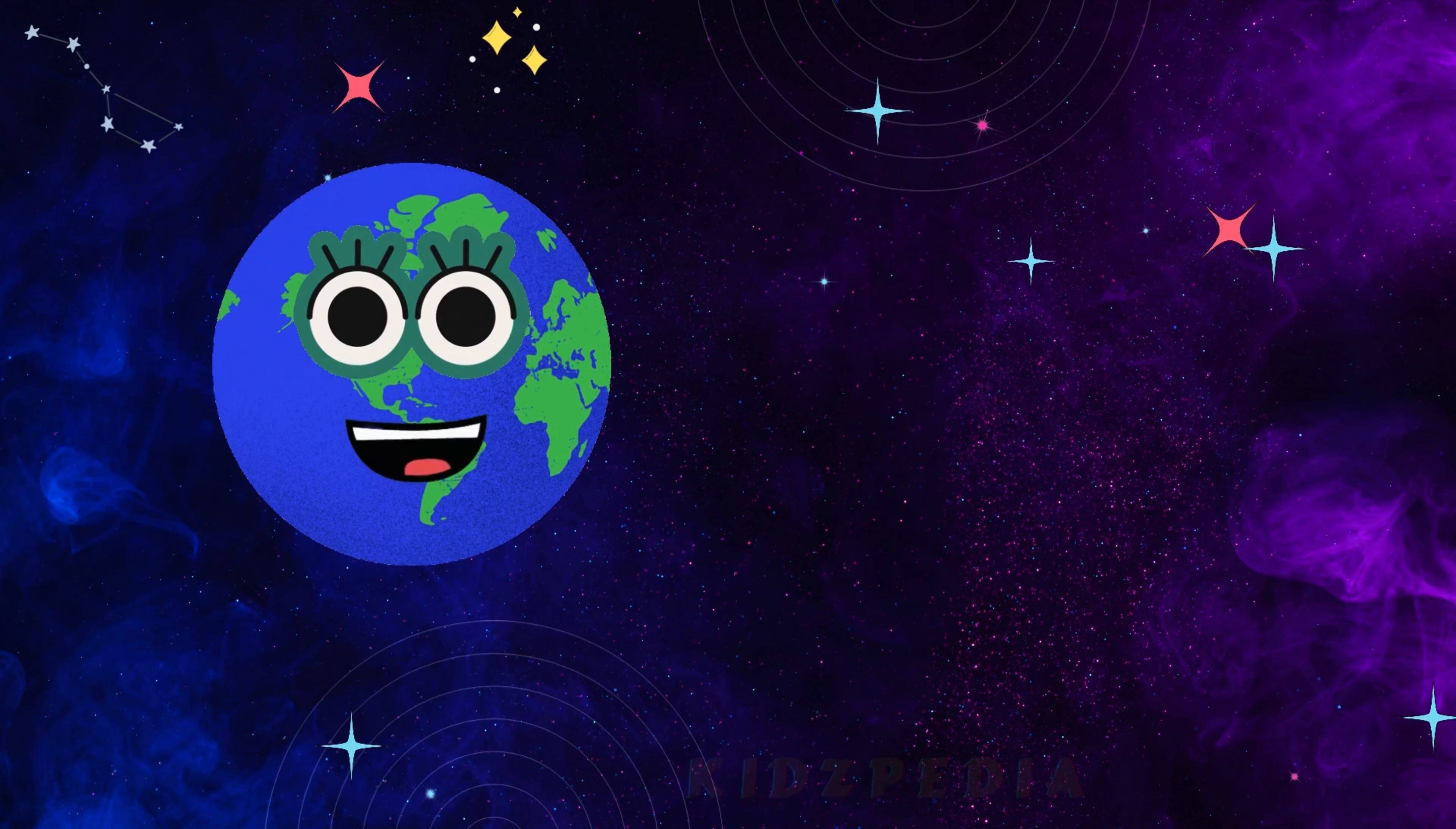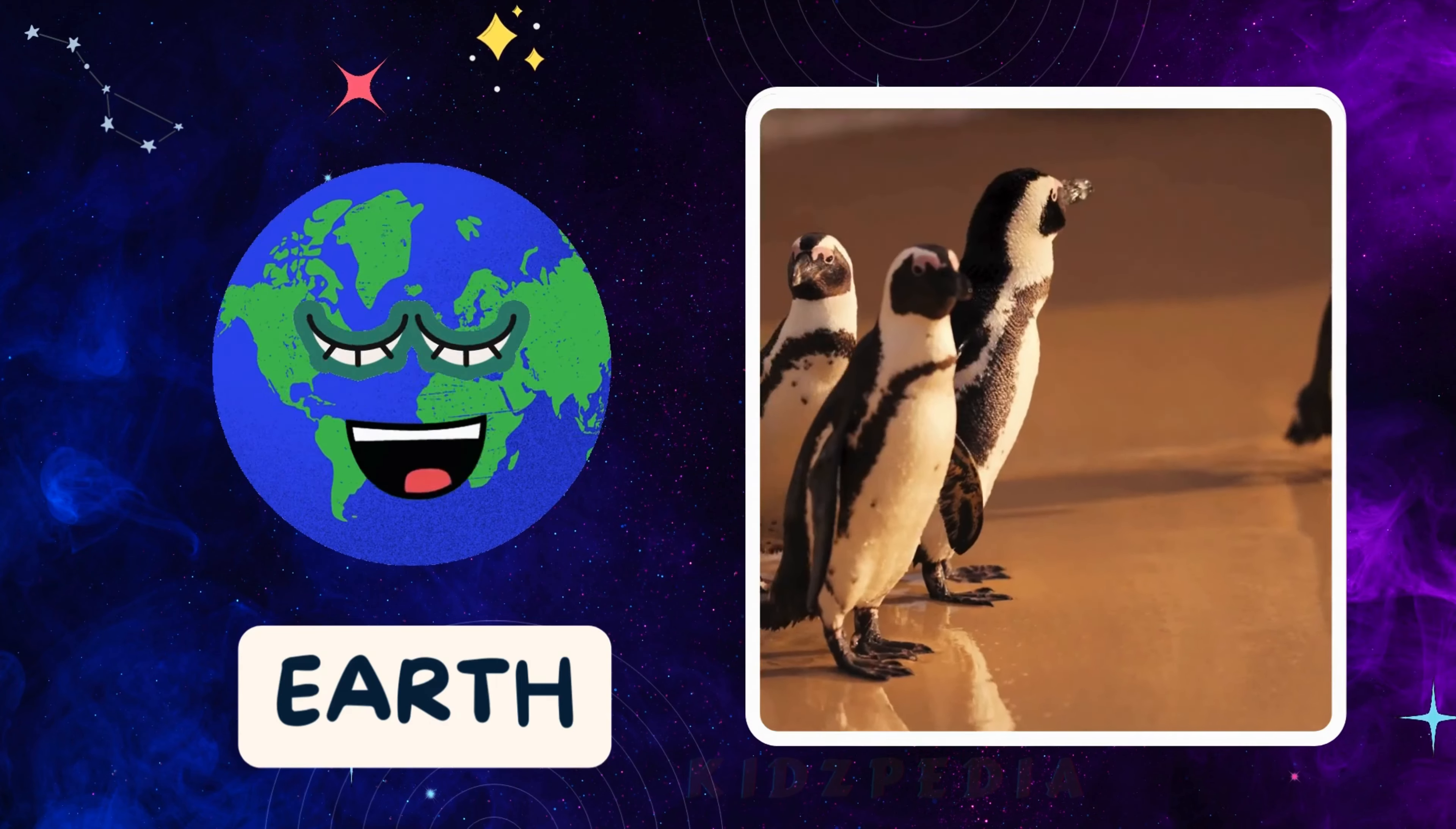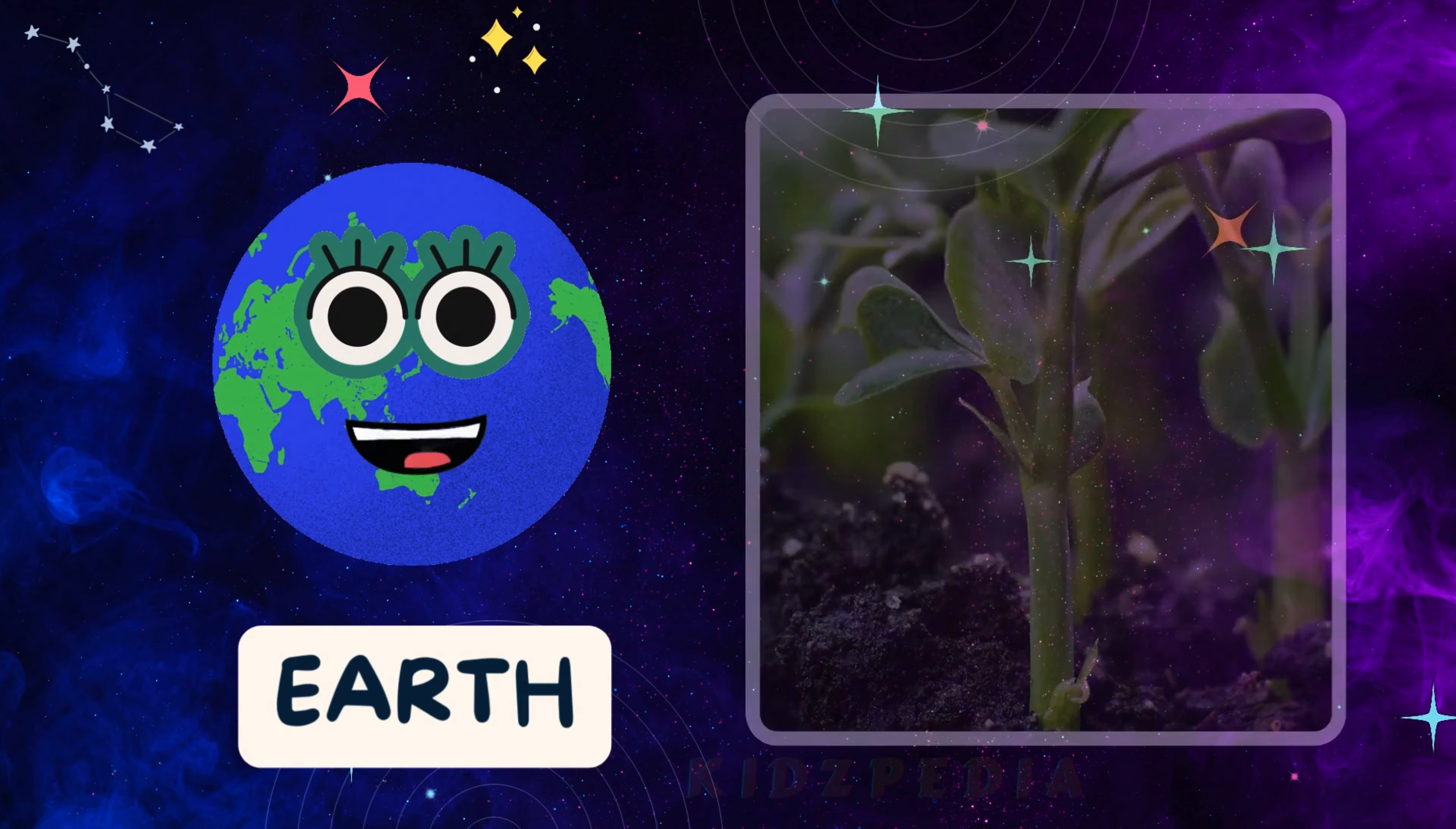Hey, everyone. I'm Earth, your home planet. I've got everything you need to live: water, air, and all kinds of life. I'm covered with oceans, forests, and deserts, and I have a special atmosphere that keeps the air clean and the temperature just right. I'm perfectly placed at just the right distance from the sun, so it's not too hot or too cold. This makes me the perfect place for plants, animals, and people to live.